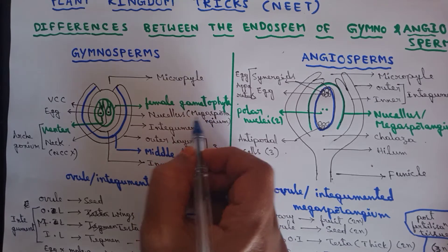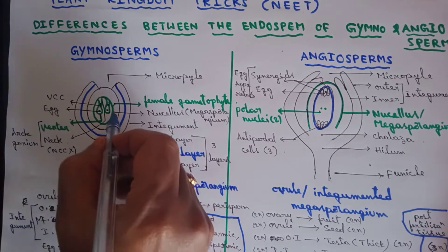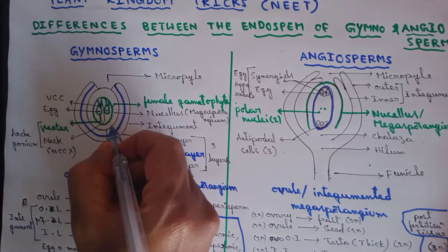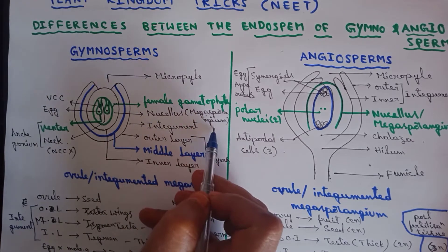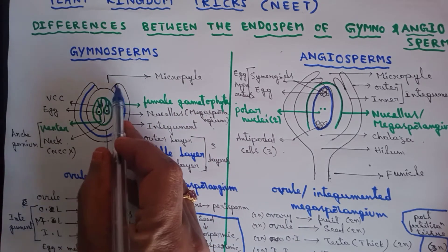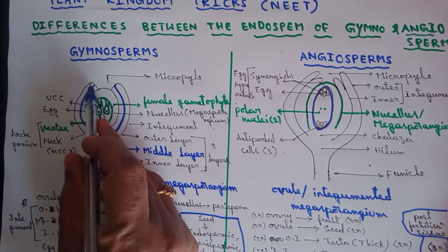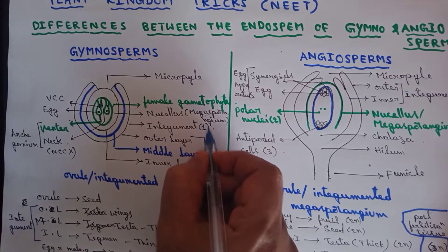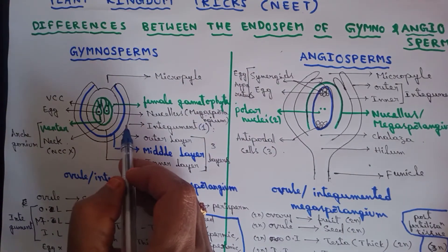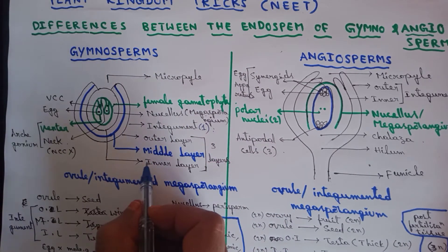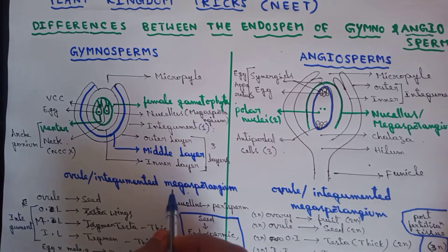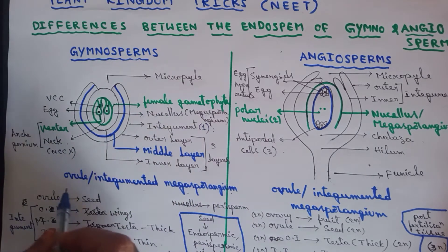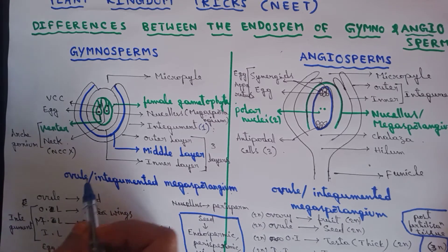The body of the megasporangium is nucellus, and this nucellus is surrounded by integument. Here, only one integument is present. This megasporangium covered by one integument is called a unitegmic ovule. So ovule is nothing but integumented megasporangium — the nucellus covered by integument is called the ovule.